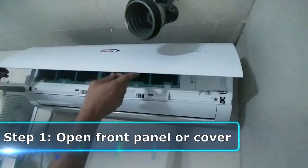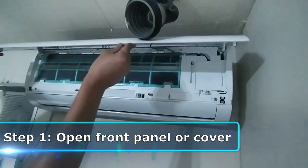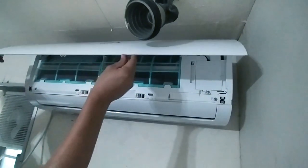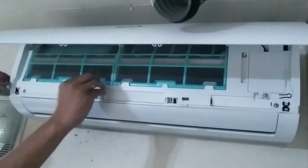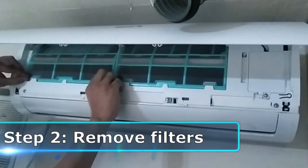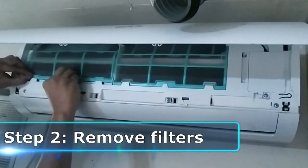Step one is opening the front panel or cover to gain access to the air filters. Next, we remove the air filters either by sliding them out or snapping them off.